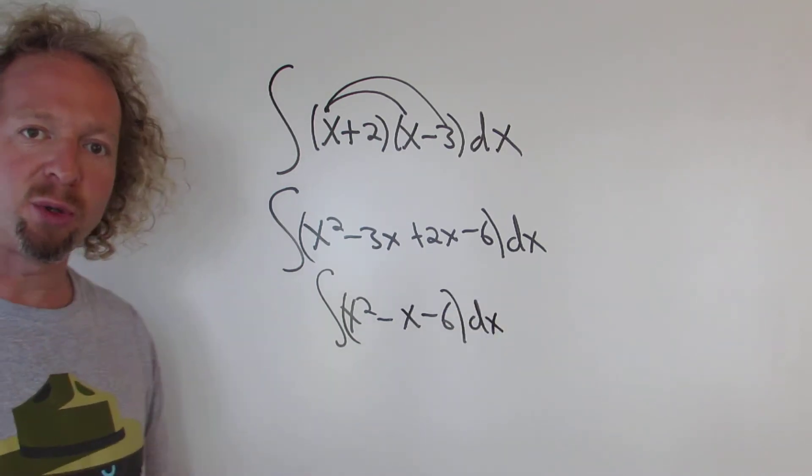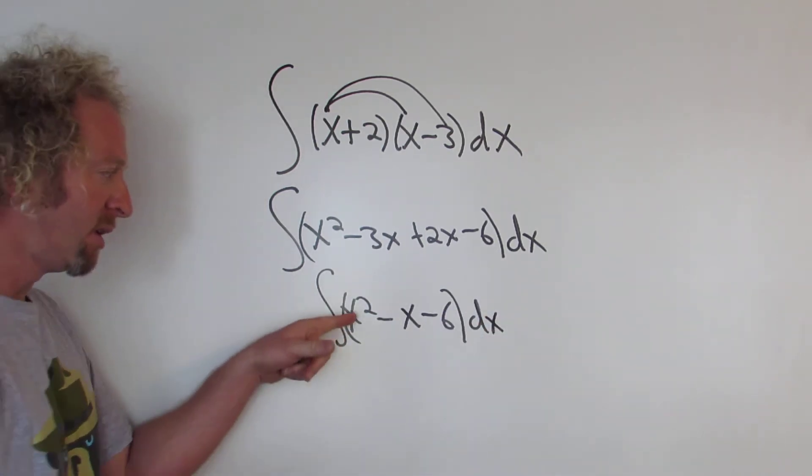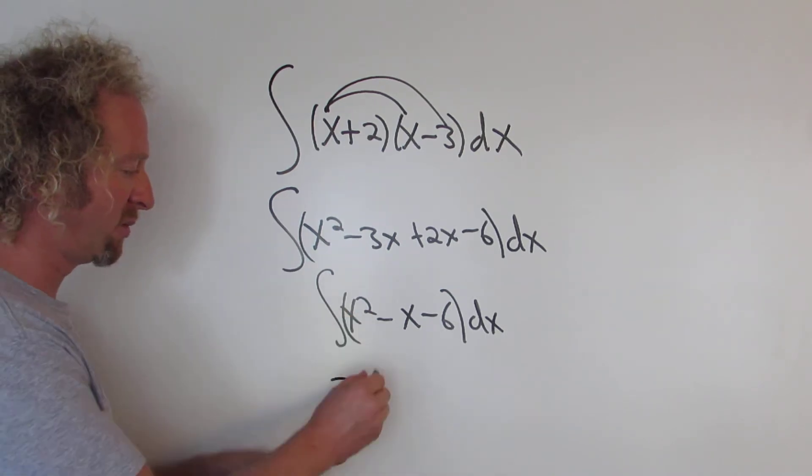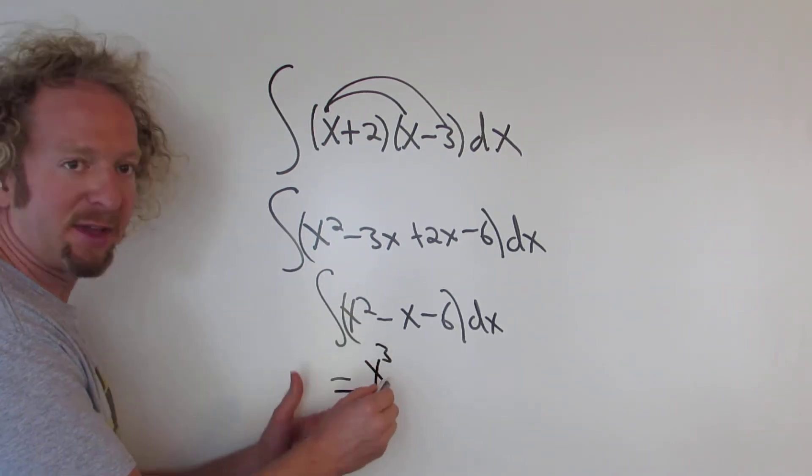Now we can use the power rule of integration to finish the problem. There's a 2 here. The rule is you add 1, so 2 plus 1 is 3. And you divide by that number, so 3.